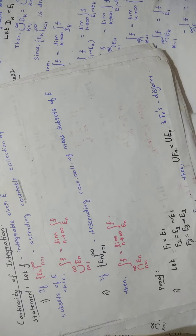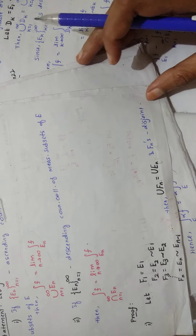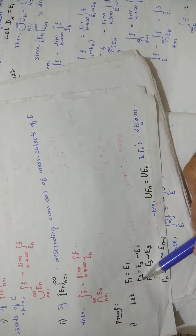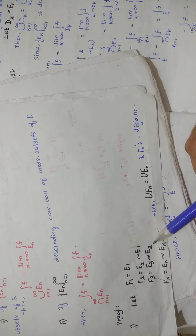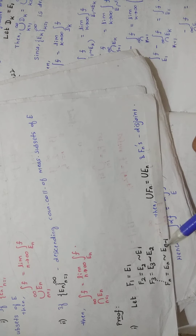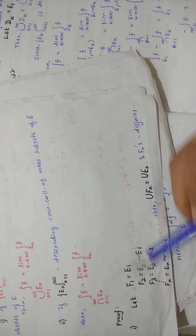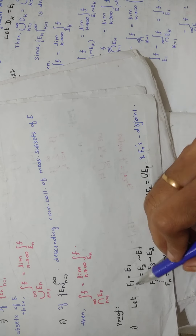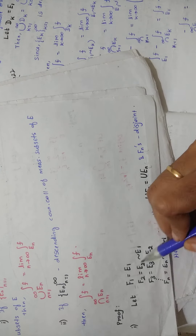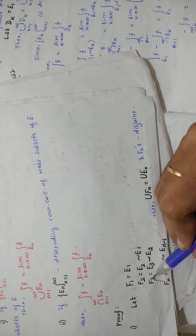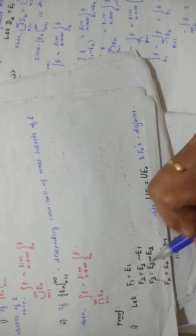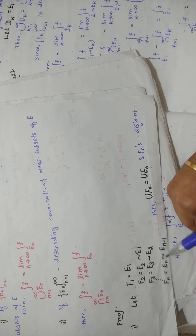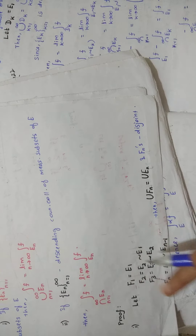Let's start proving the first part. You define: F1 equal to E1, F2 equal to E2 minus E1, F3 equal to E3 minus E2, and in general Fn equal to En minus En-1. Keep this in mind — the difference pattern. F1 means E1; F2 means E2 difference E1; F3 means E3 minus E2; Fn means En difference En-1.